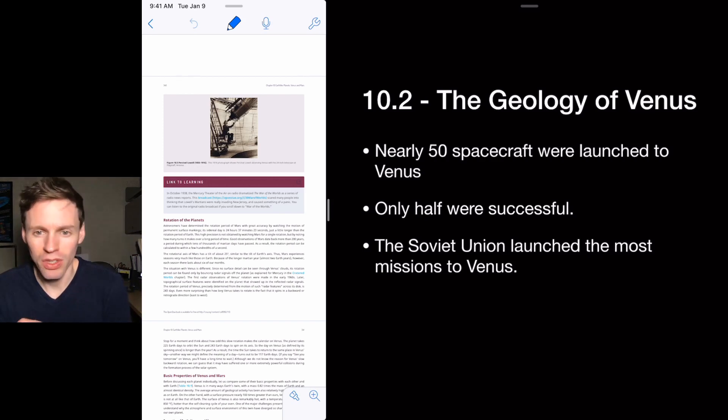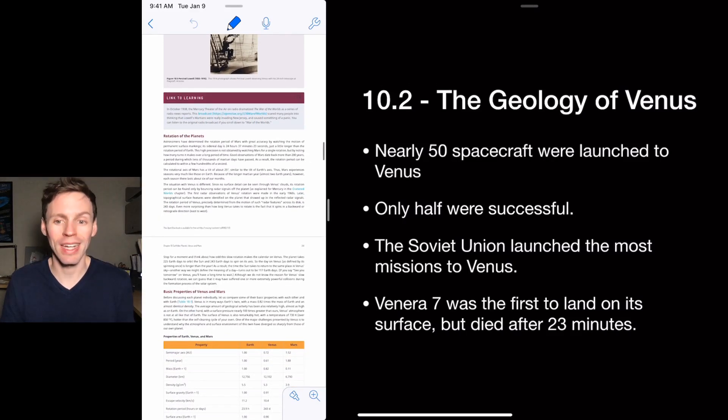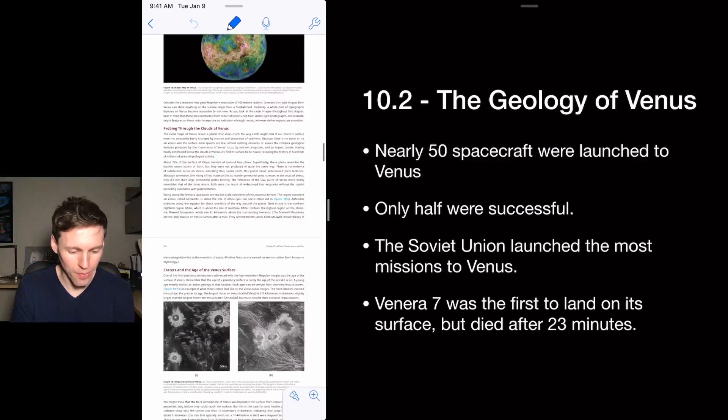The Soviet Union launched the most missions to Venus. And the first to land actually died after 23 minutes because of the extreme pressures and temperatures. It just couldn't survive.